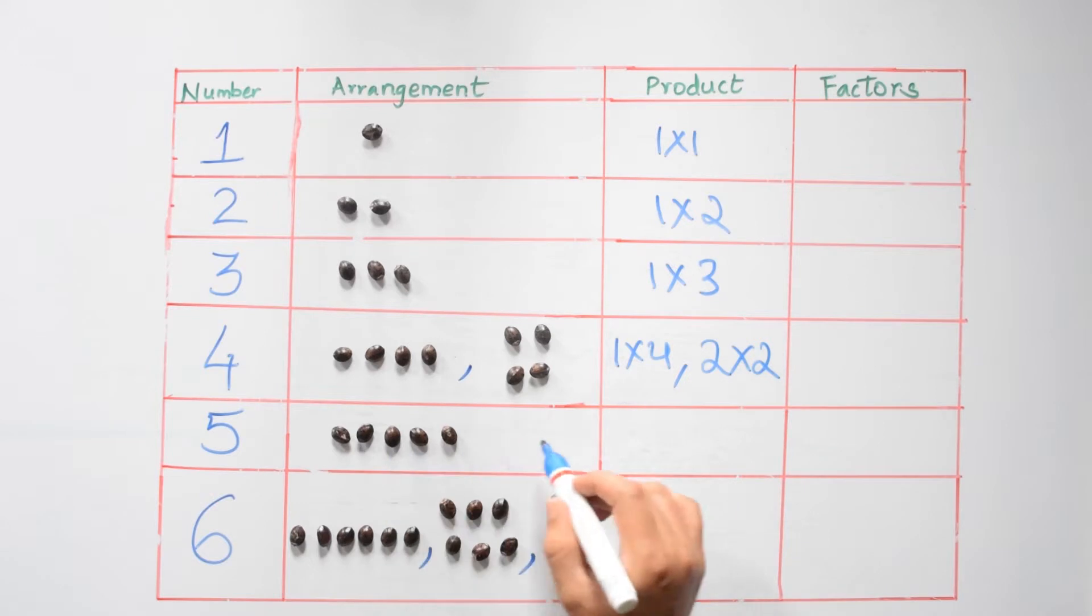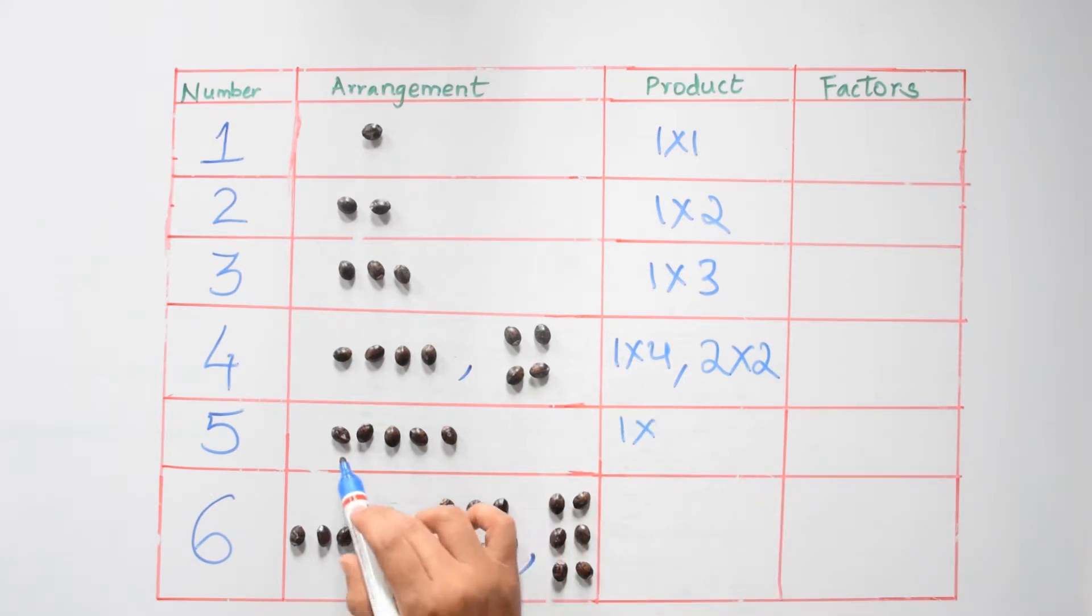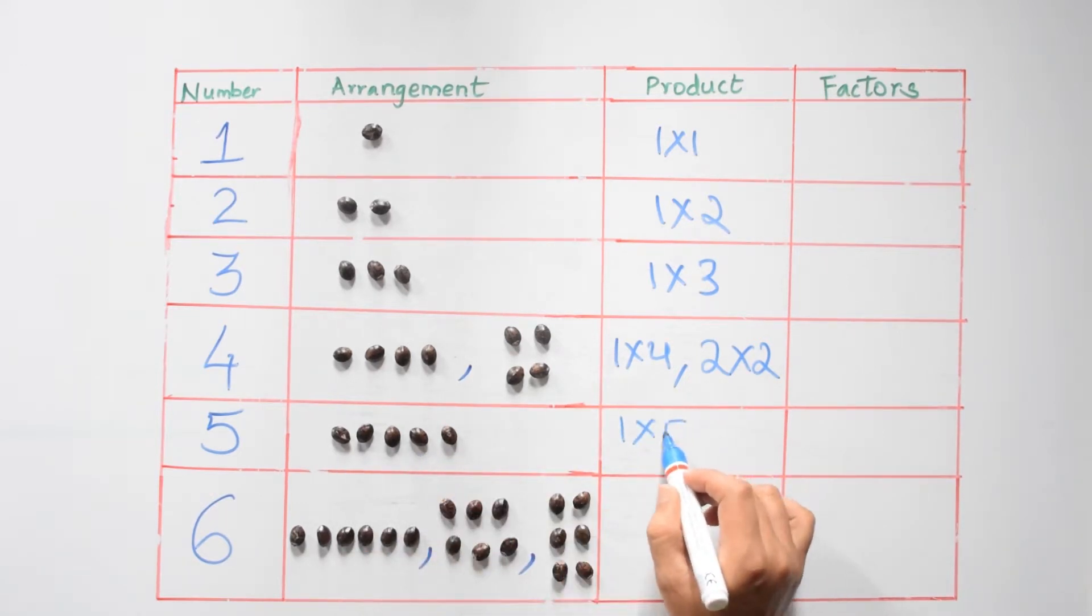Now five has one row times five columns. And six has been arranged in three ways. The first way, one row times six columns. Next, two rows times three columns. Next, three rows times two columns.